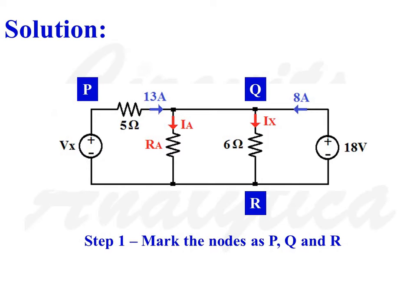First step, mark various nodes in this network. Here the nodes are marked as P, Q, and R as the reference node.